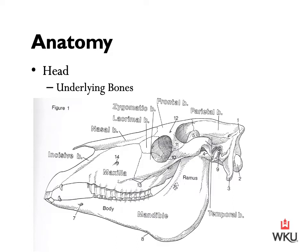To review the bones you need to know of the horse's skull: the nasal bone, the maxilla, the mandible, the eye orbital, and then be able to identify the incisors versus the molar teeth.